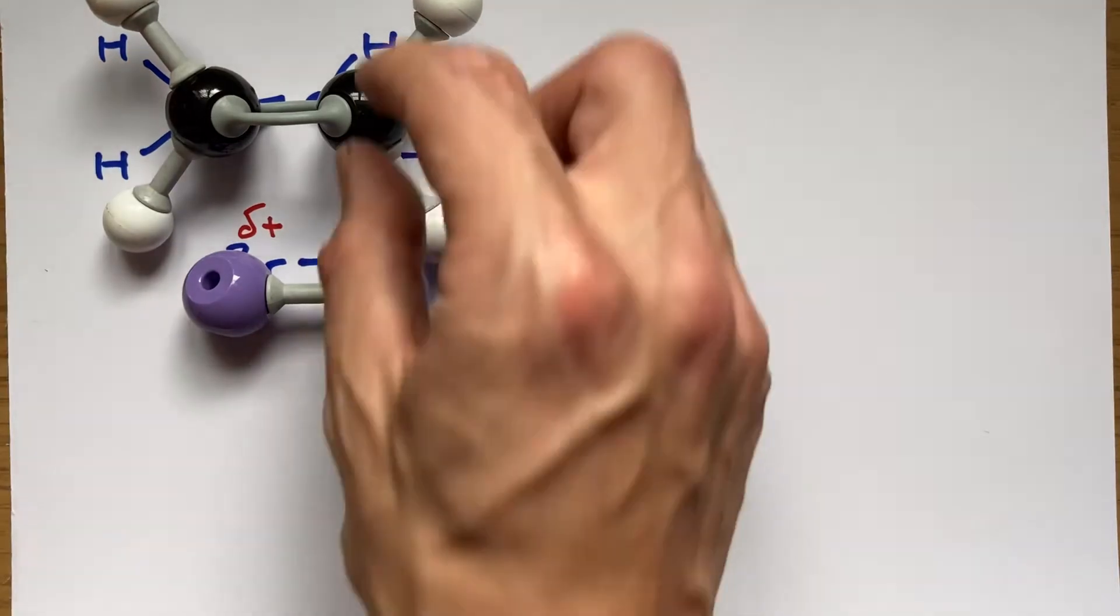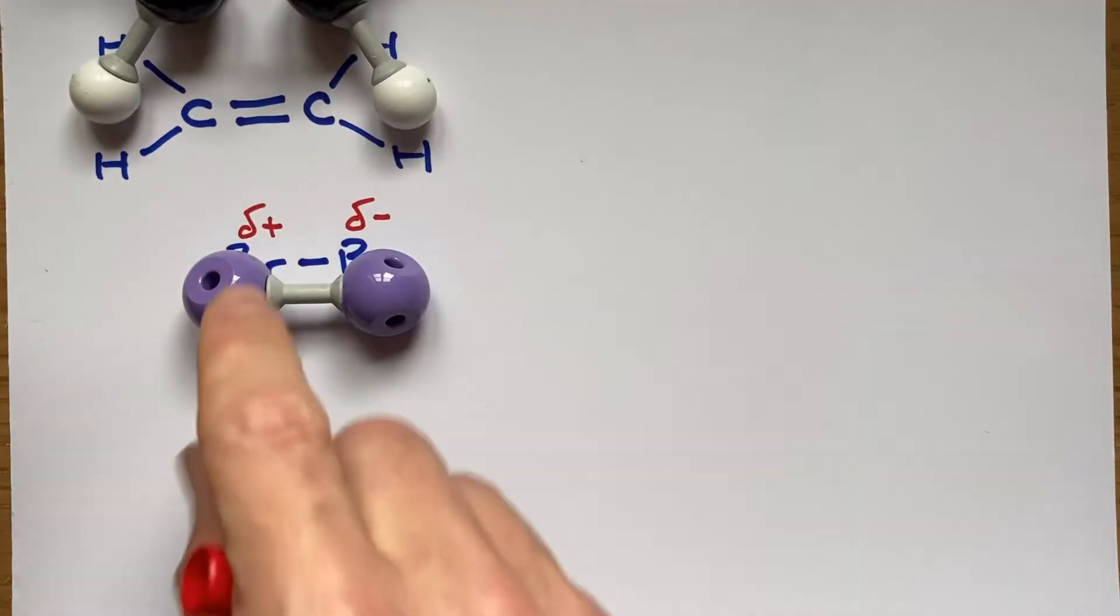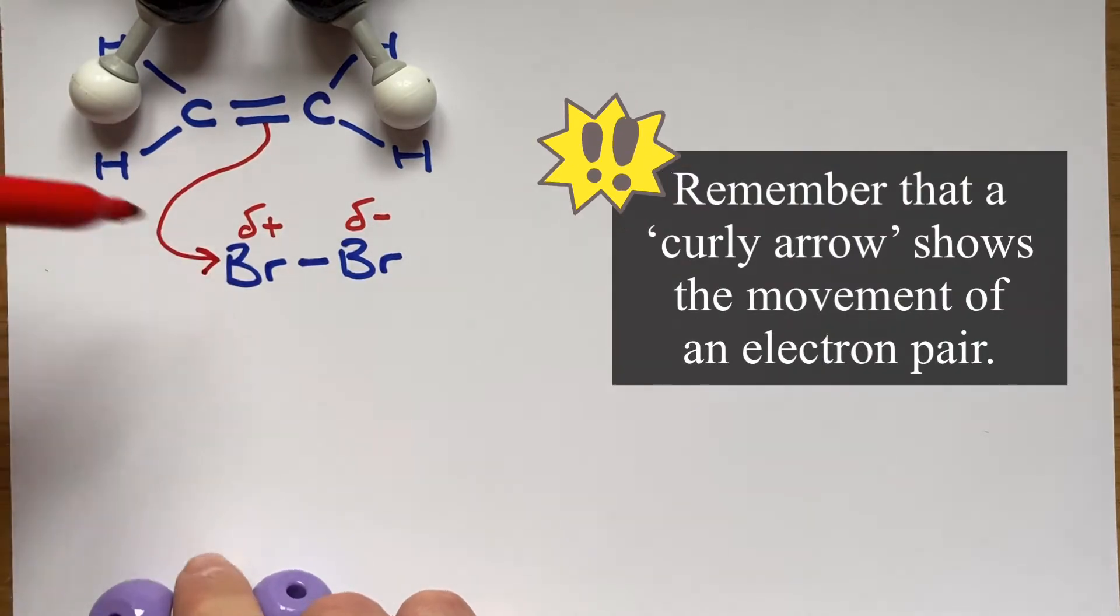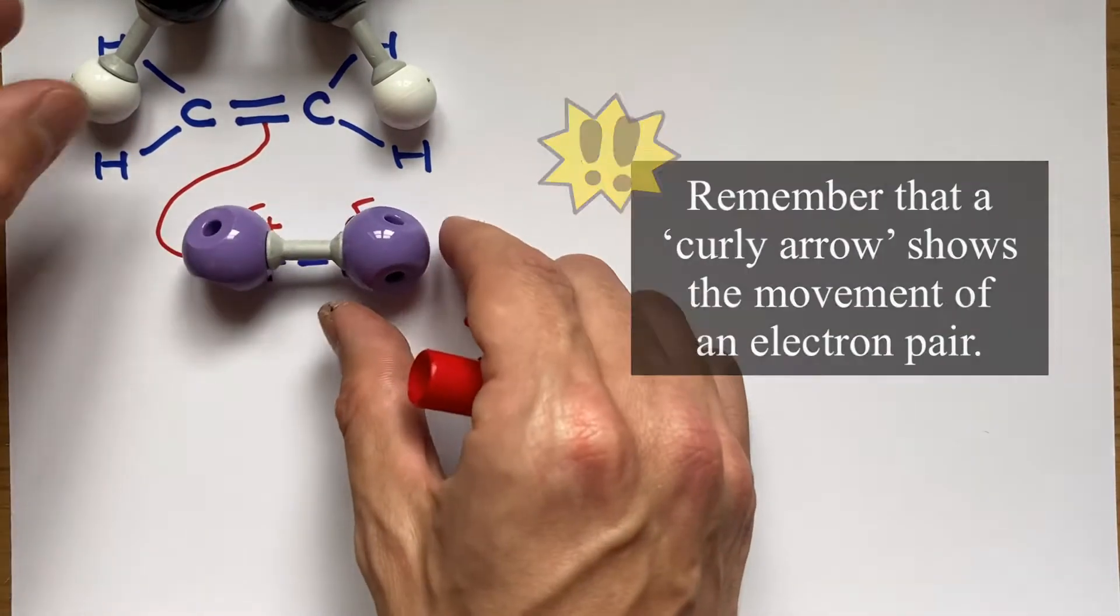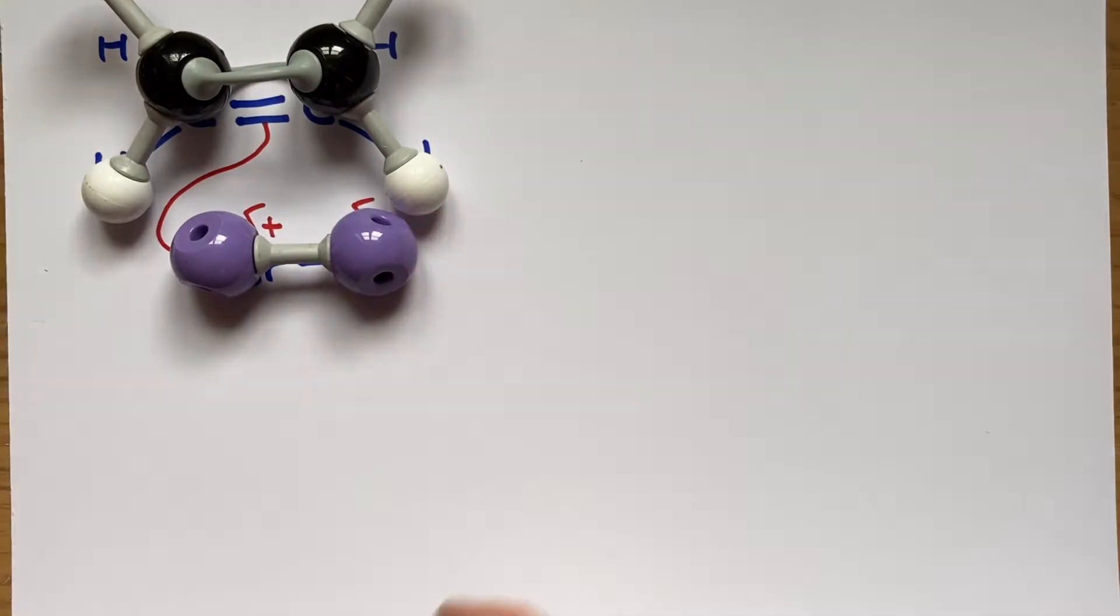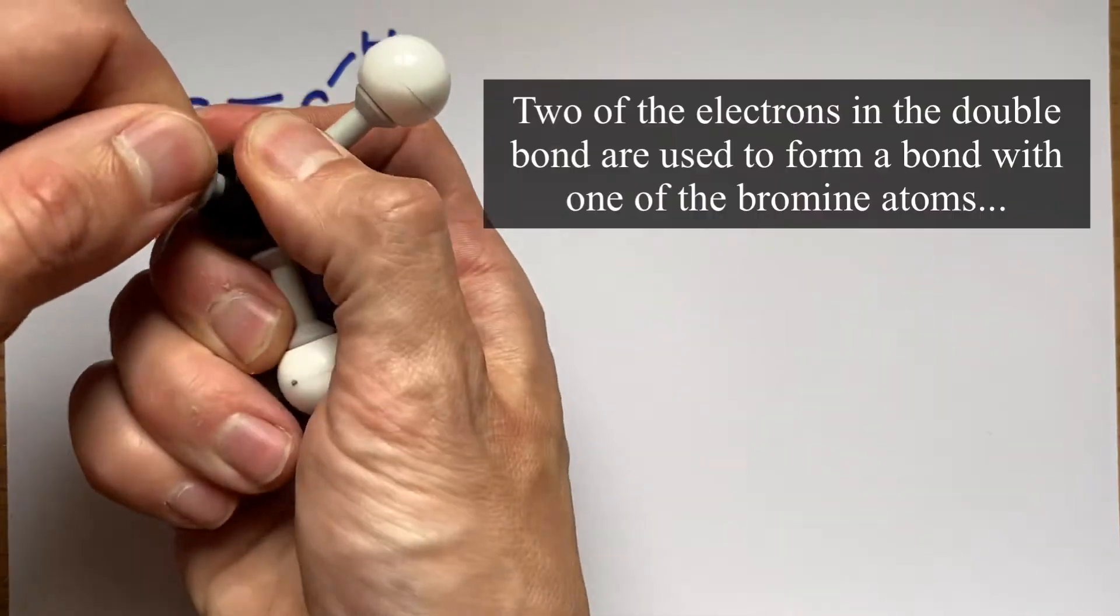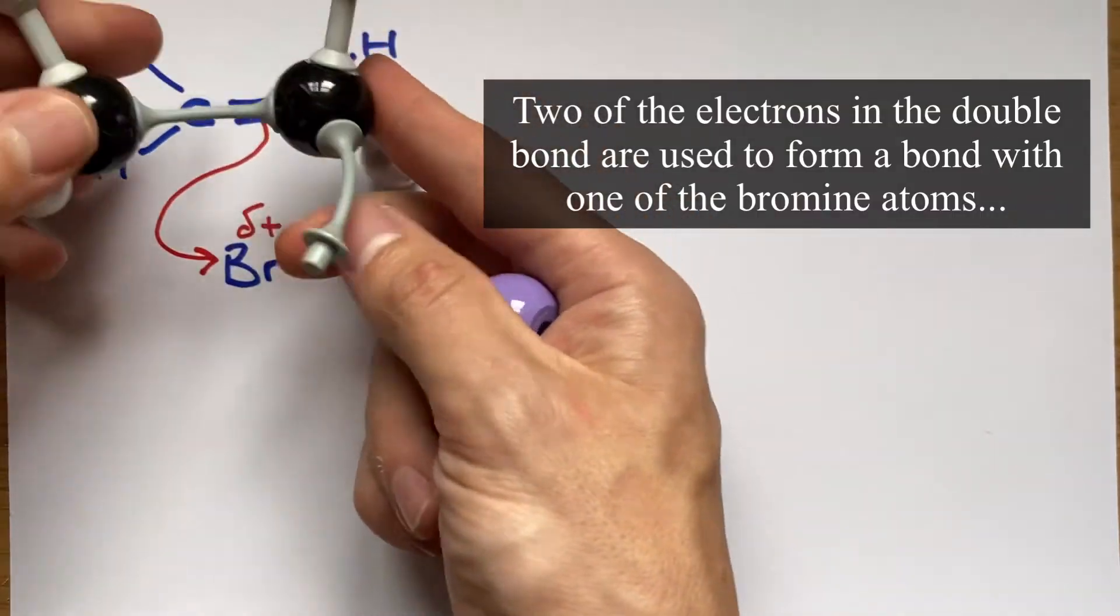Once this dipole has been established, the double bond is able to reach out with its first curly arrow, which remember shows the movement of an electron pair to attack that bromine. One of the two carbons from the original double bond now is going to make a bond to this bromine atom that's been attacked in the bromine molecule.